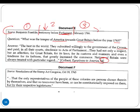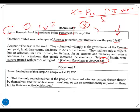Looking at this document, Ben Franklin is on testimony before Parliament. The question is: what was the temper of America towards Great Britain before the year 1763? As a contextual message, he's asking about pre-French and Indian War conditions. This testimony concerns conditions before the French and Indian War — what was life like in the colonies? One thing to mention here is the component of salutary neglect, abbreviated SN. That's the time period in reference.